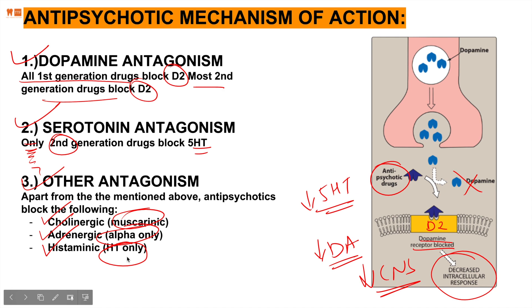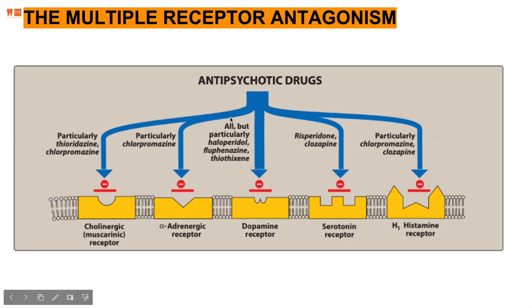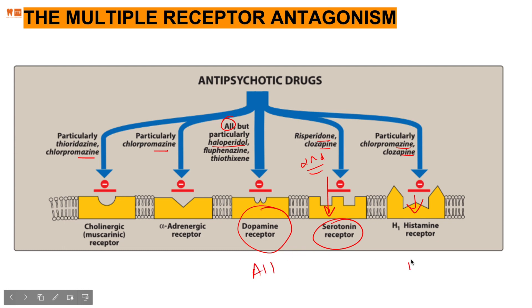Looking at the pictorial diagram: haloperidol, the highly potent first generation drug, blocks dopamine receptors. Chlorpromazine particularly blocks cholinergic muscarinic receptors. At alpha receptors, risperidone and clozapine, both second generation, are the blockers. At histaminic receptors, chlorpromazine and clozapine are responsible — covering both first and second generation. Please note these combinations as they are key to understanding the clinical effects in the next slide.